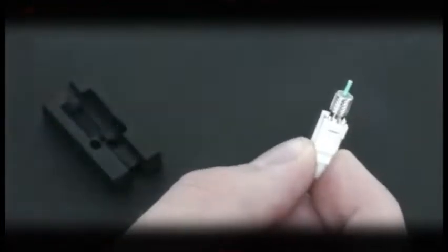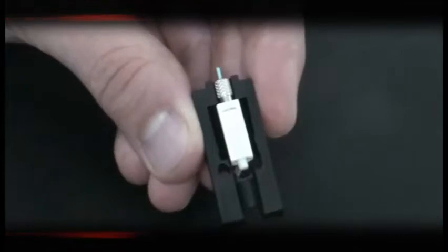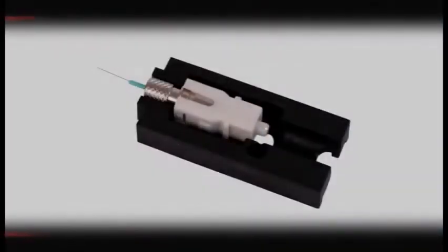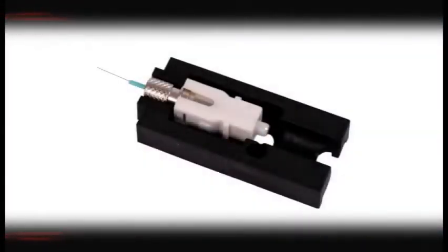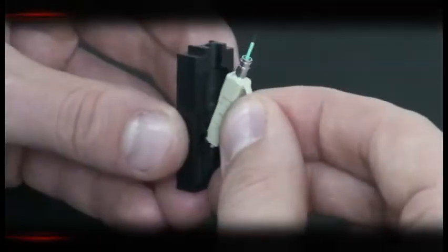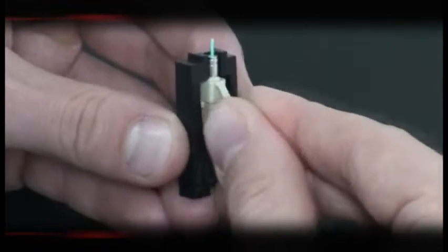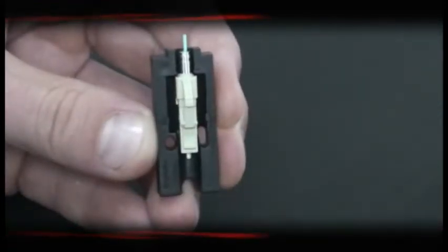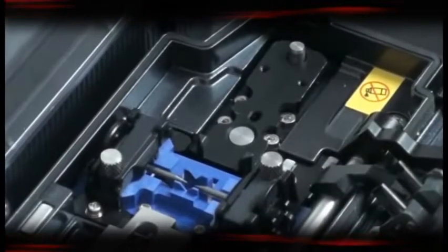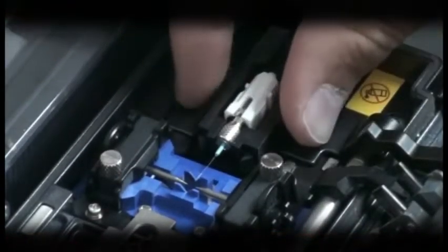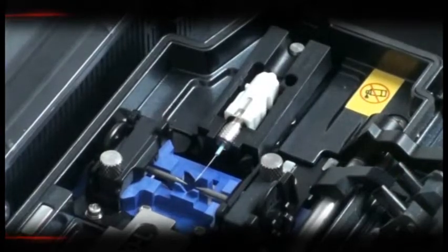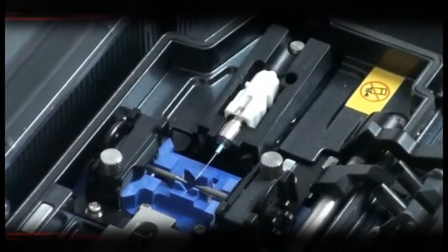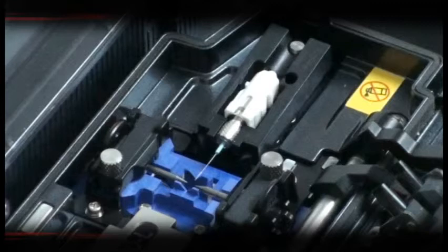Now insert the connector into the splice-on connector holder so that the back end of the connector body is flush with the end of the holder. Once aligned correctly, the connector should fit freely in the holder with no force required. Please note that while placing the LC connector into the holder, placing the front of the connector into the holder first may allow for a more secure fit as shown. Next, remove the existing right-side fiber holder and insert the patented SOC holder in its place, making sure that the fiber stub sits properly in the V-groove block of the splicer.